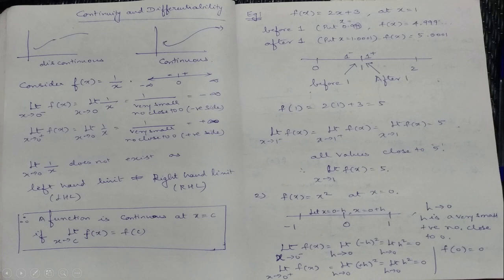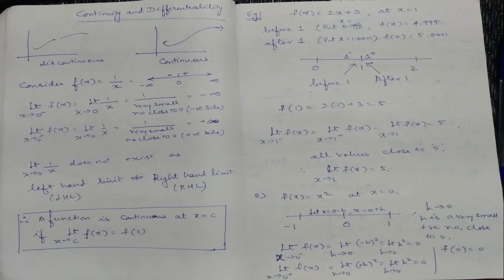We discussed this in 11th standard. To the left of 0 we write it as 0 minus; to the right as 0 plus. The limit as x tends to 0 minus means we take a number very, very close to 0 from the negative side — like −0.0001. So 1 divided by a very, very small negative number gives us minus infinity.